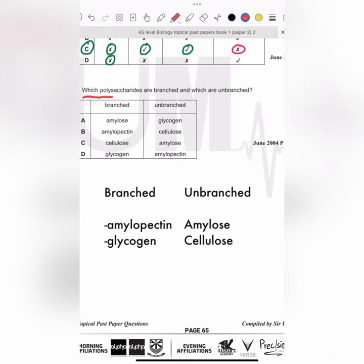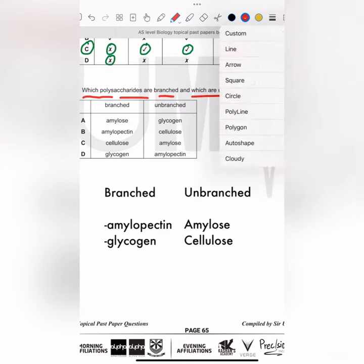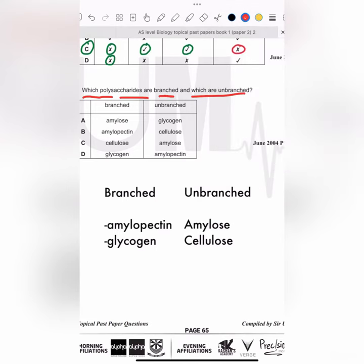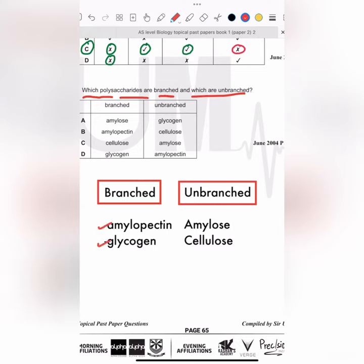Which polysaccharides are branched and which are unbranched? In the syllabus for AS level biology, there are four polysaccharides, two of which are branched and two are unbranched. Branched polysaccharides are amylopectin and glycogen, and unbranched polysaccharides are amylose and cellulose.